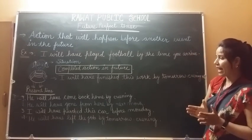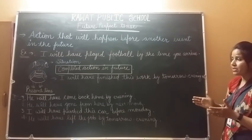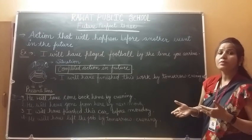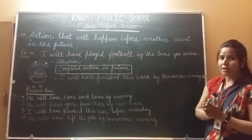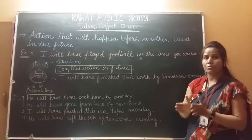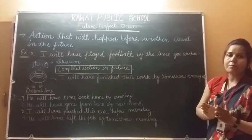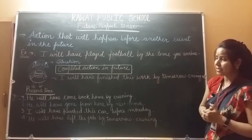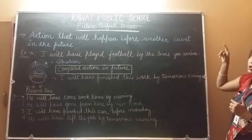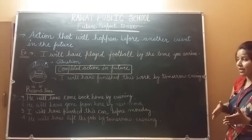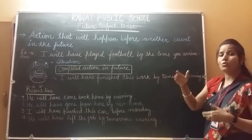Second example: 'He will have gone from here by next month.' 'Gone' is the third form of 'go' — first form: go, second form: went, third form: gone. In future perfect tense we always use will/shall and the verb's third form. So: next month तक वो यहाँ से जा चुका होगा.